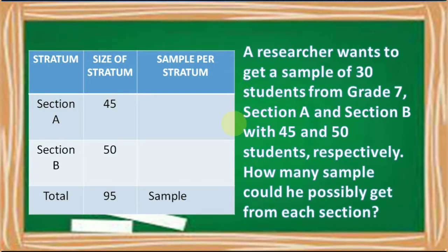Let us now get the sample per stratum. Let's have first section A. We have 45 divided by 95. So, we have to divide the size of the stratum by the total number of population, which is 95. Then, times 30.